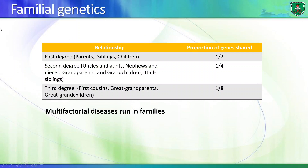First-degree relatives — parents, siblings, and children — share half of an individual's genes. Second-degree relatives — uncles, aunts, nephews, nieces, grandparents, grandchildren, and half-siblings — share one-fourth of your genes. Third-degree relatives, like first cousins and great-grandparents, share one-eighth of your genes.